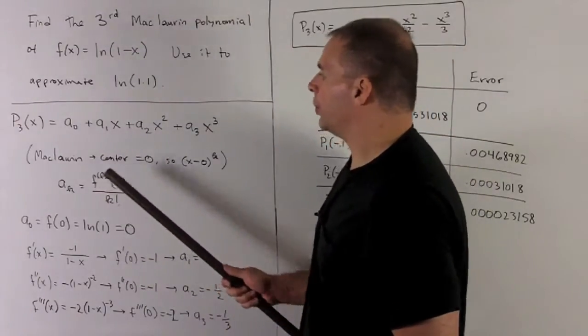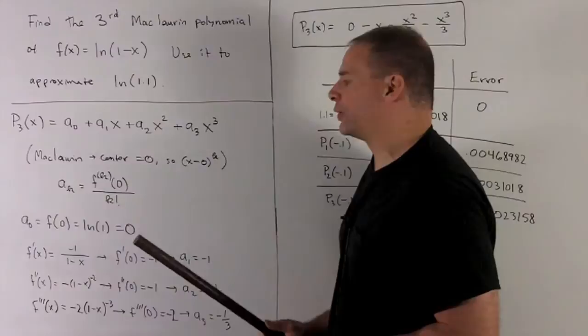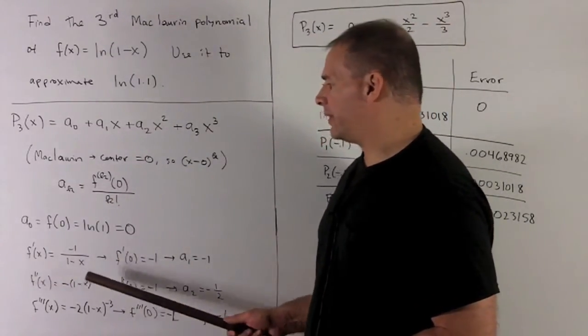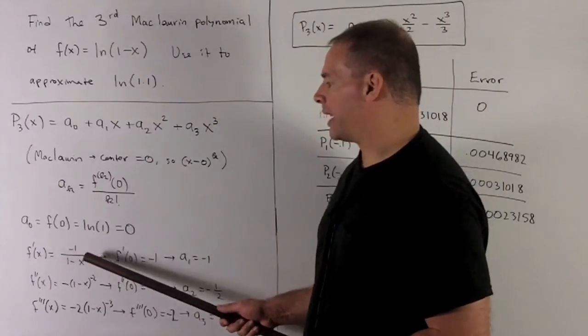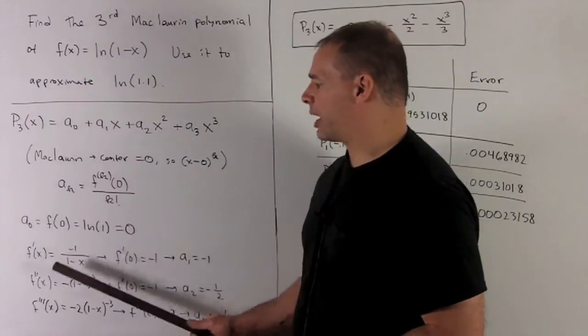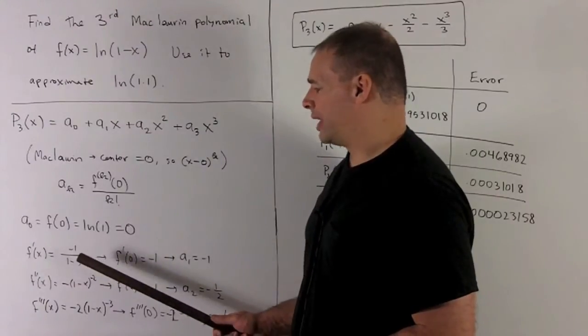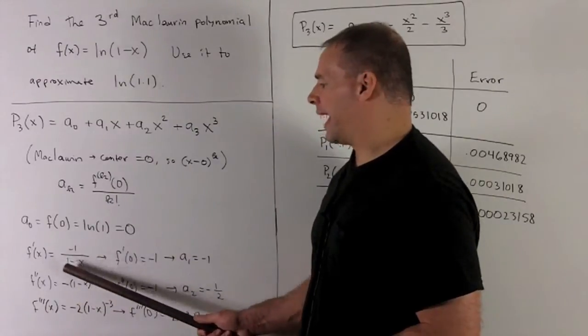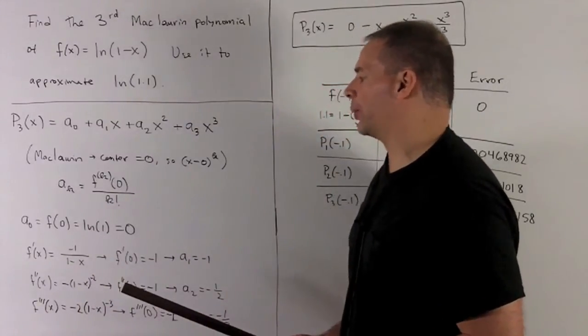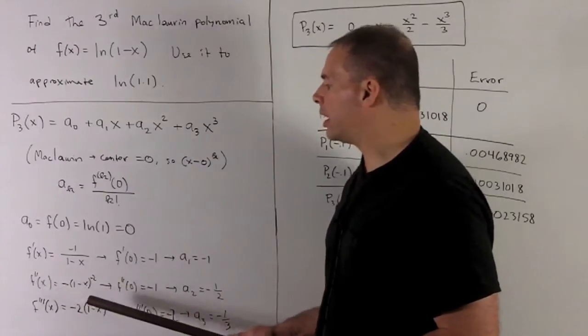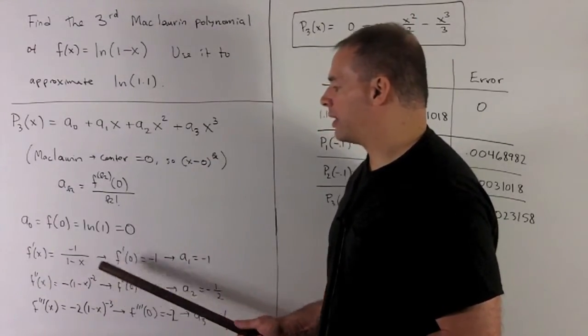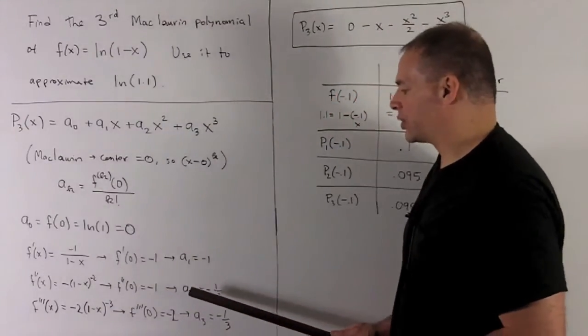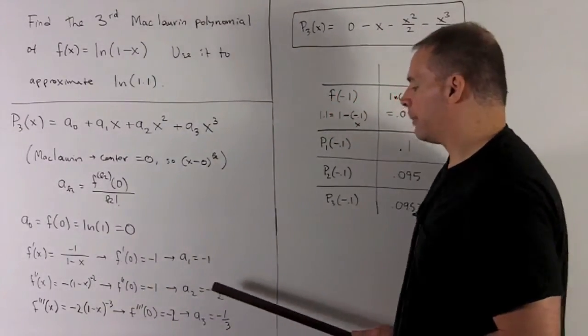For a_2, second derivative evaluated at 0, divided by 2 factorial, which is 2. So our second derivative, this is just minus 1, (1-x) to the minus 1. That minus 1 exponent comes down to give me a plus. We take the derivative of the inside that throws in another minus sign, so we have a minus 1 in front. Then on the exponent, we turn the minus 1 into a minus 2. I put 0 in here, that gives me minus 1 raised to the minus 2, which is just 1, so we have a minus 1. Since we're looking at a_2, I have to divide by 2. So I get minus 1 half.